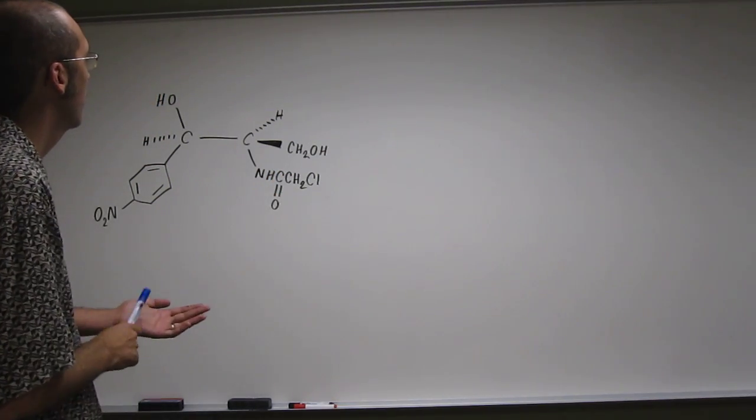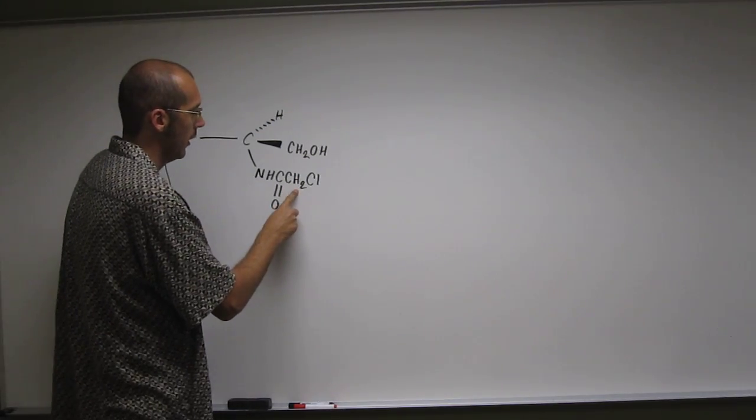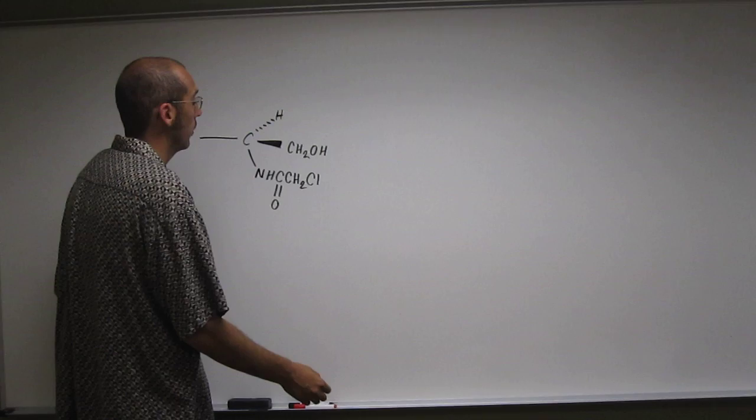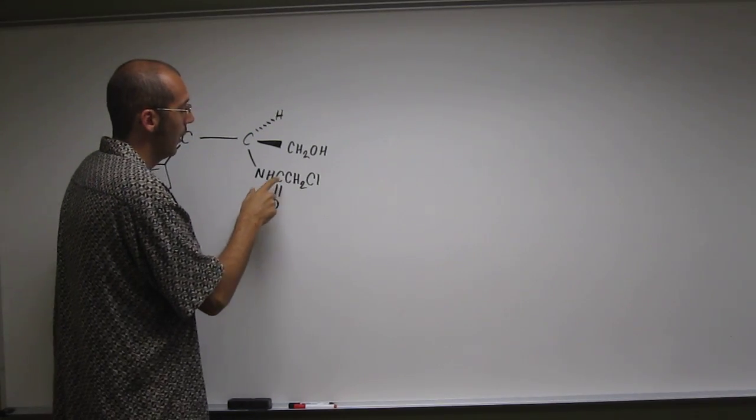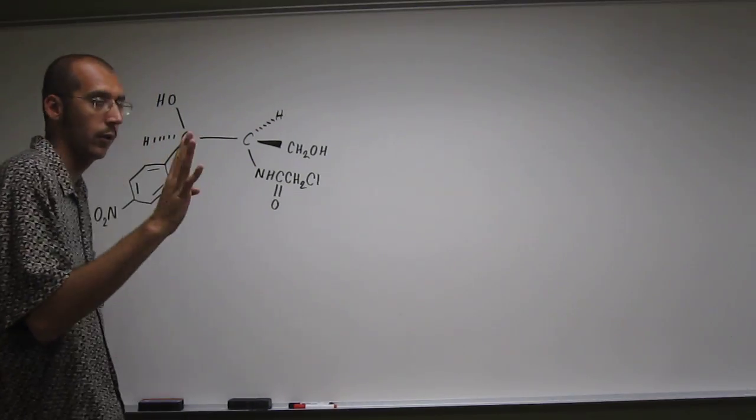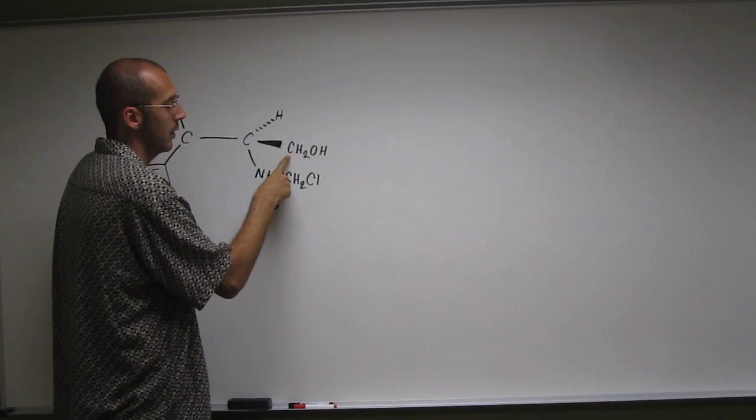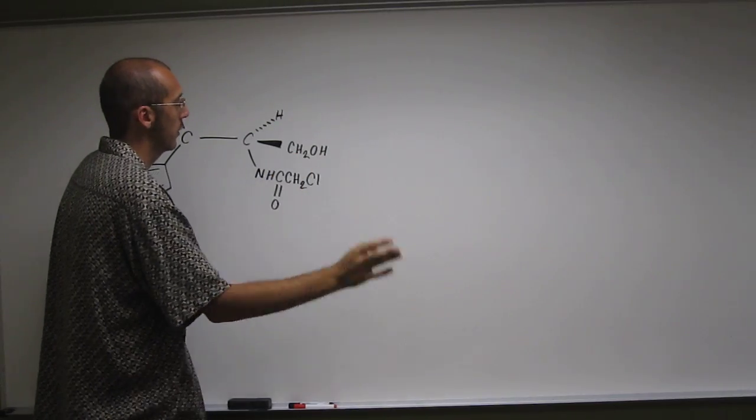So which ones have four different groups attached to it? This one has two hydrogens attached to it, so already not four different groups. This one has a double bonded to an oxygen, so it doesn't even have four groups attached to it. You have to have four groups attached to you to be a stereocenter to begin with. This carbon is attached to two hydrogens, not a stereocenter.